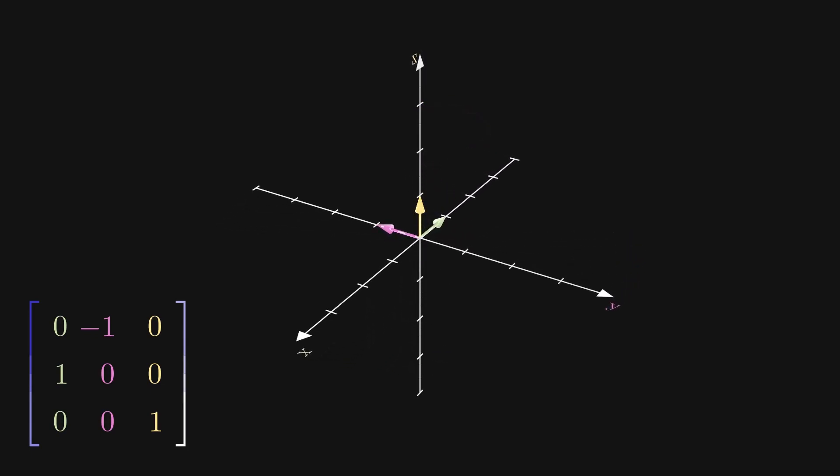Now, it's clear that the yellow z-unit vector is unmoved by this transformation, and so it's an eigenvector since multiplying it by 1 will achieve the same effect. But it does not really look like there are any other vectors that are direction invariant.